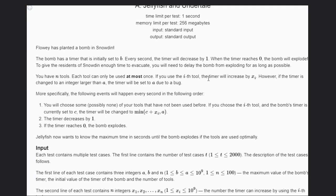When using tool i, the timer will increase by xi. However, if the timer is changed to an integer larger than A, then the timer will be set to A due to a bug.